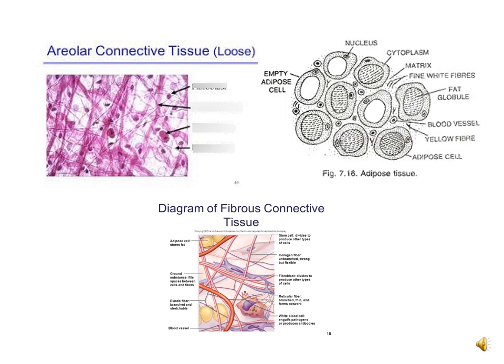In diagram 3, you will find areolar tissue and also fibres — yellow fibres and white fibres. Yellow fibres mean ligaments, and white fibres mean tendons.